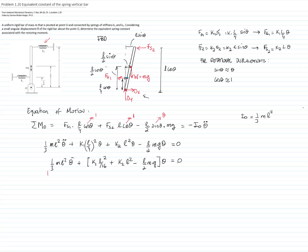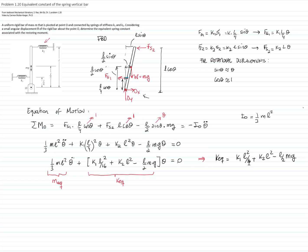This term represents the equivalent mass, and this term represents the equivalent constant of the spring. Therefore, the equivalent spring constant is K1·L²/16 plus K2·L² minus (L/2)·Mg. It's important to notice the negative sign in the spring constant. If the effect of the weight overcomes the forces of the springs, the bar will not be stable and will not vibrate around the equilibrium position, which in this case is the vertical position. A very large weight makes the system unstable. This is what is called an inverted pendulum.